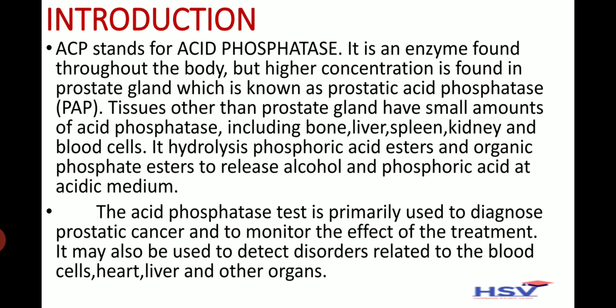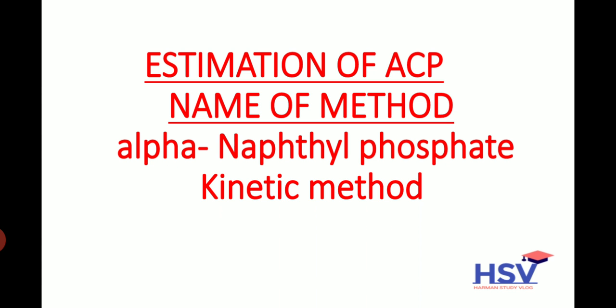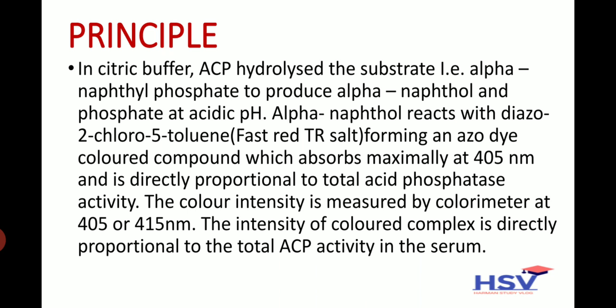The estimation of ACP uses the Alpha Naphthyl Phosphate Kinetic Method. The principle is: in citric buffer, ACP hydrolyzes the substrate alpha naphthyl phosphate to produce alpha naphthol and phosphate at acidic pH. Alpha naphthol then reacts with diso-2-chloro-5-toline fast red TR salt forming an azo-dye colored compound.